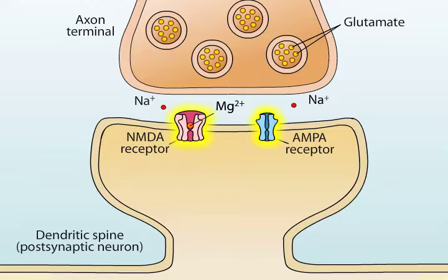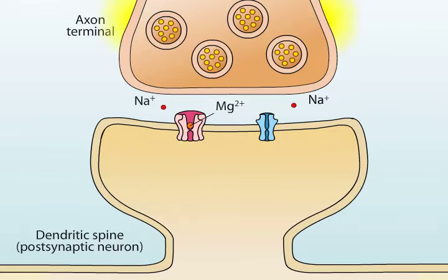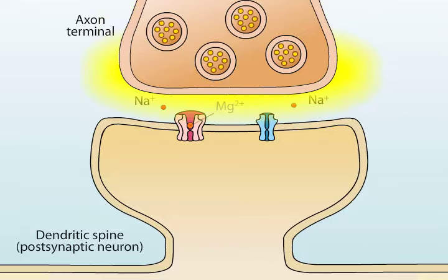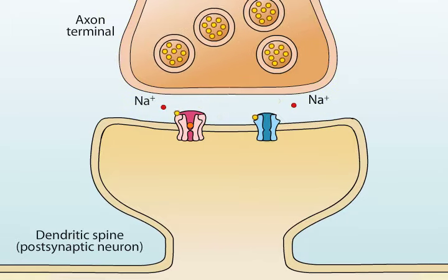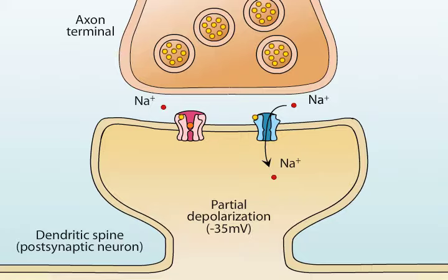Shown here is a model synapse in the CA1 region of the hippocampus containing both types of receptors. Weak electrical stimulation of the presynaptic neuron causes the release of glutamate from the axon terminal. This glutamate binds to both AMPA and NMDA receptors. Although both receptors are permeable to sodium and potassium ions, weak stimulation normally activates only the AMPA receptors, resulting in a slight depolarization of the postsynaptic neuron.